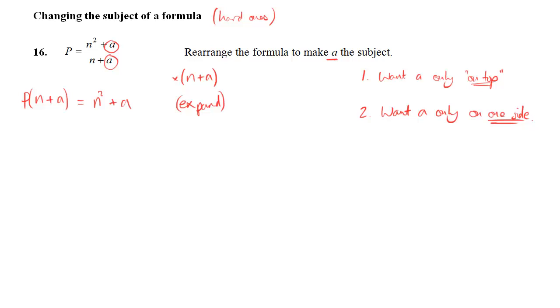So P times N gives me PN, or NP, whichever way you want to write it, and P times A gives me PA. On the right that's still equal to N squared plus A.